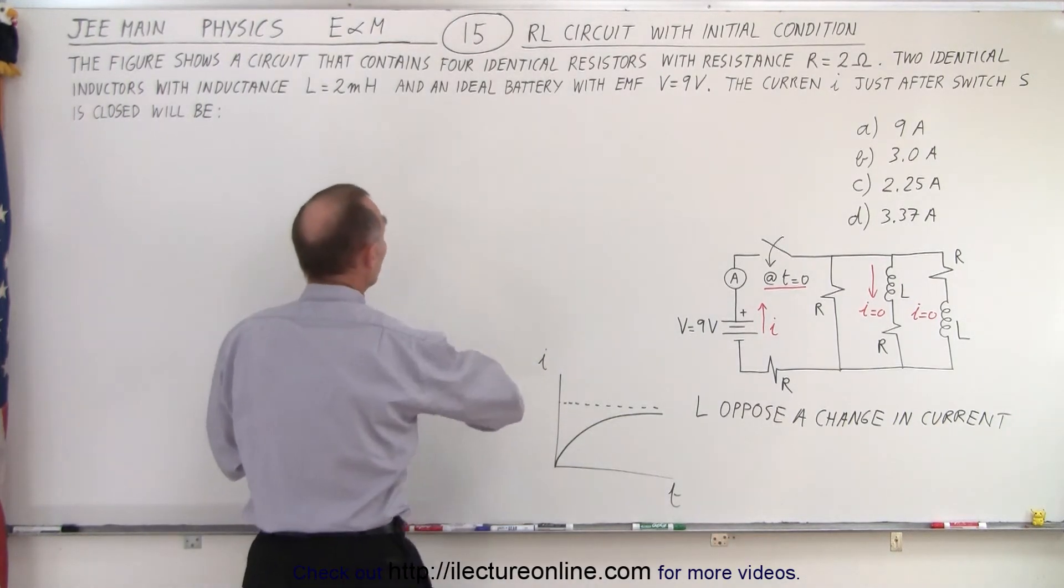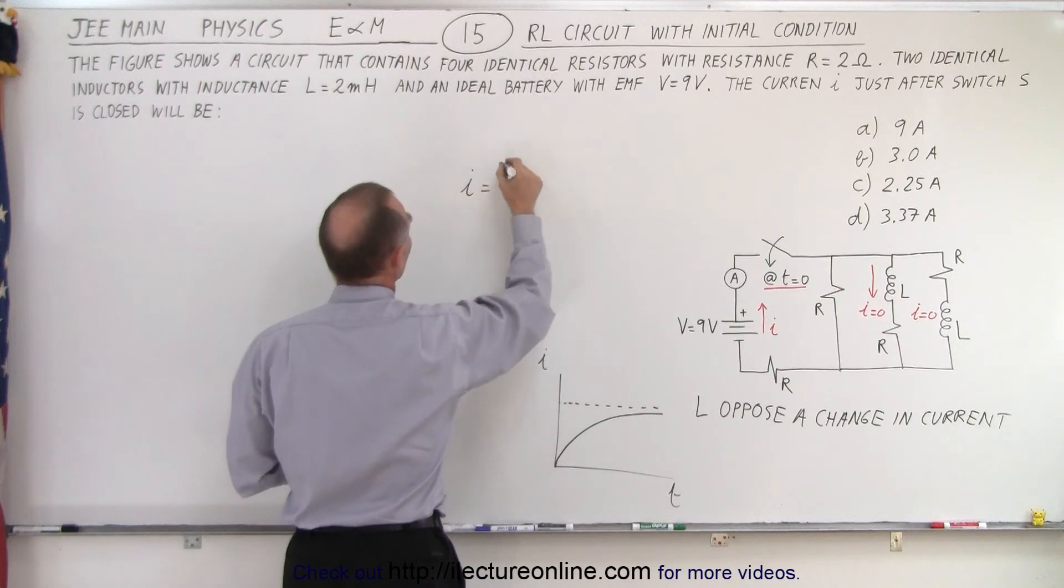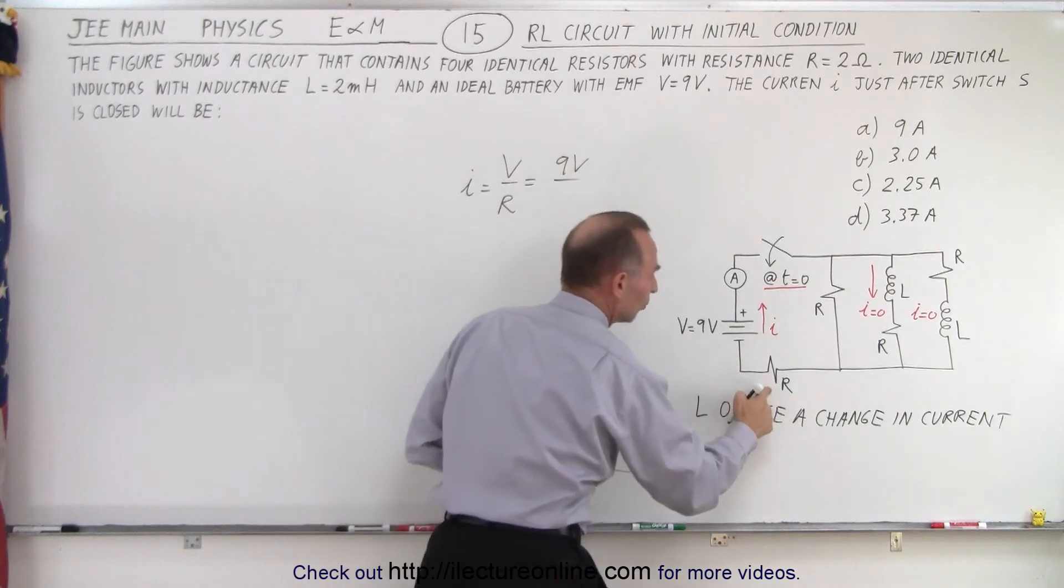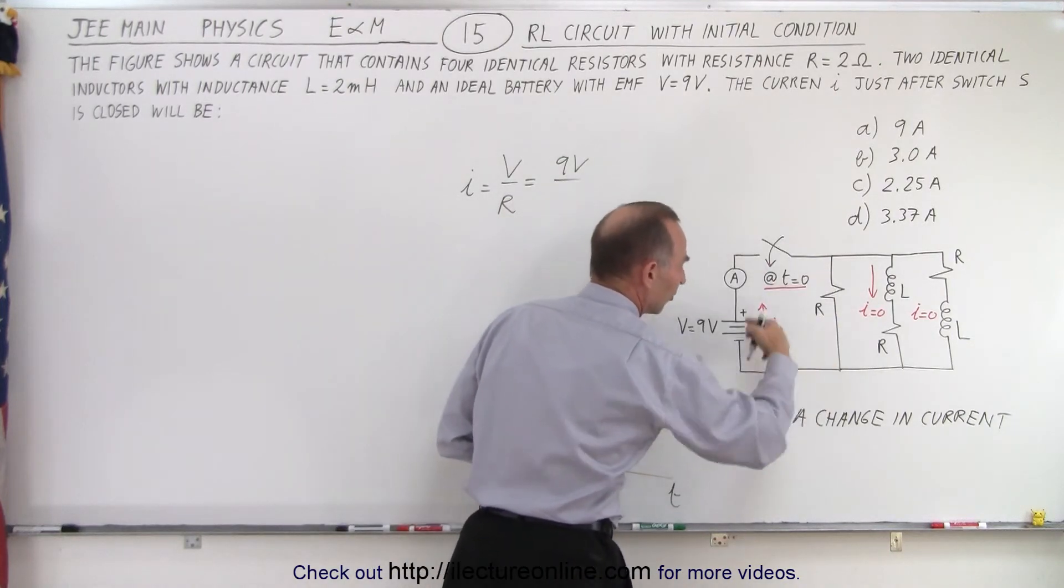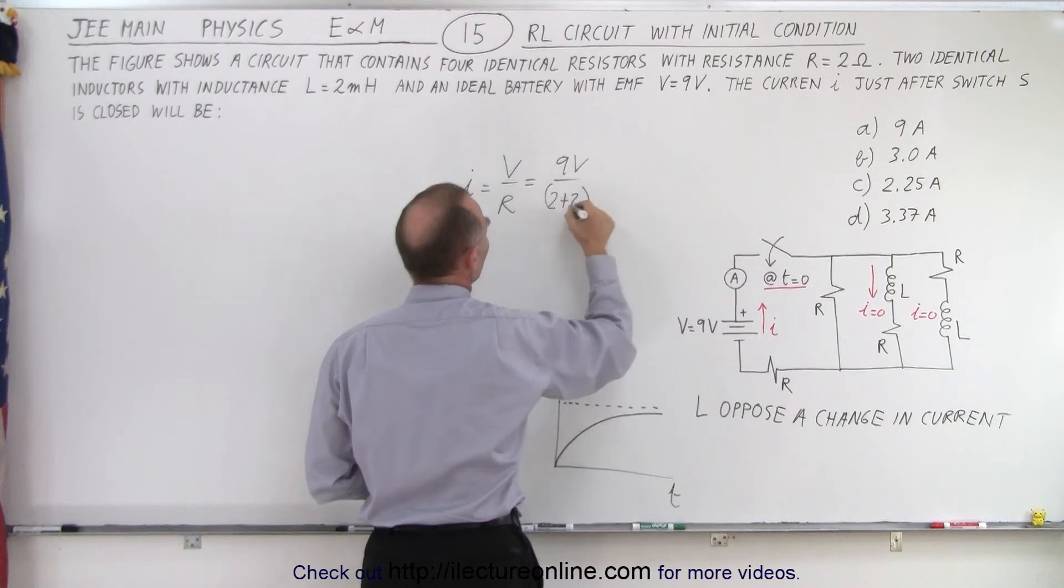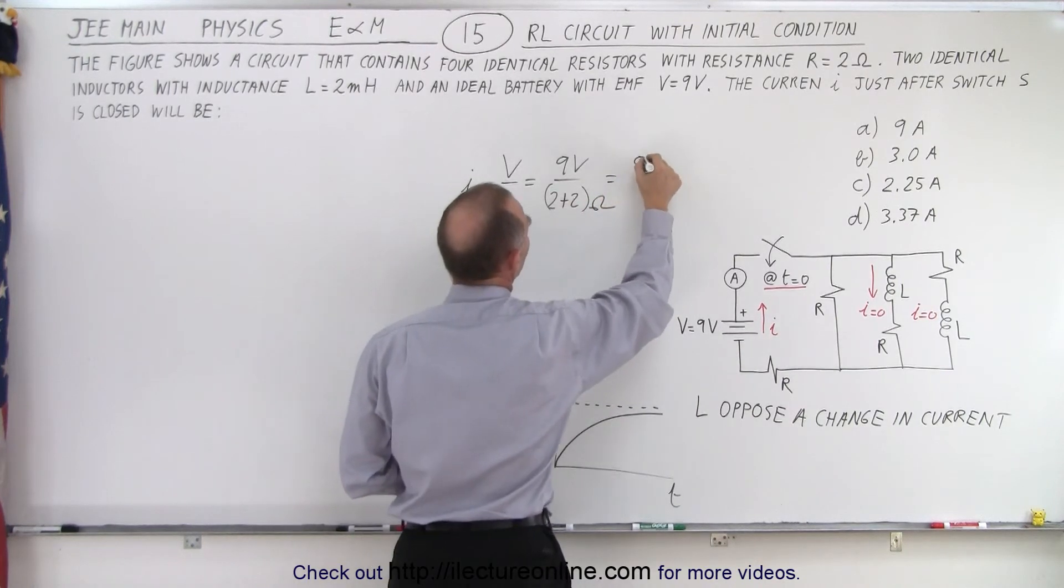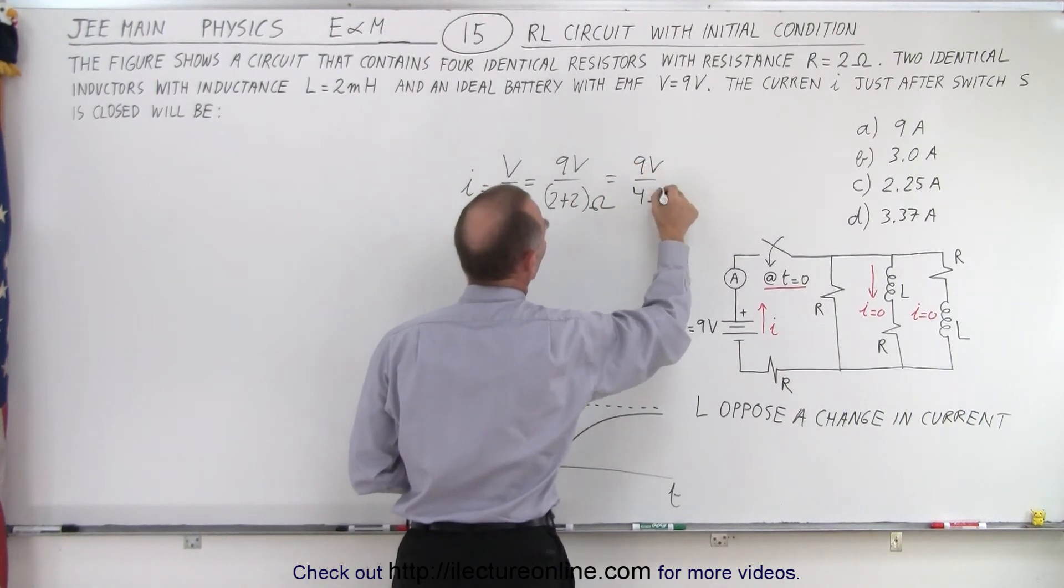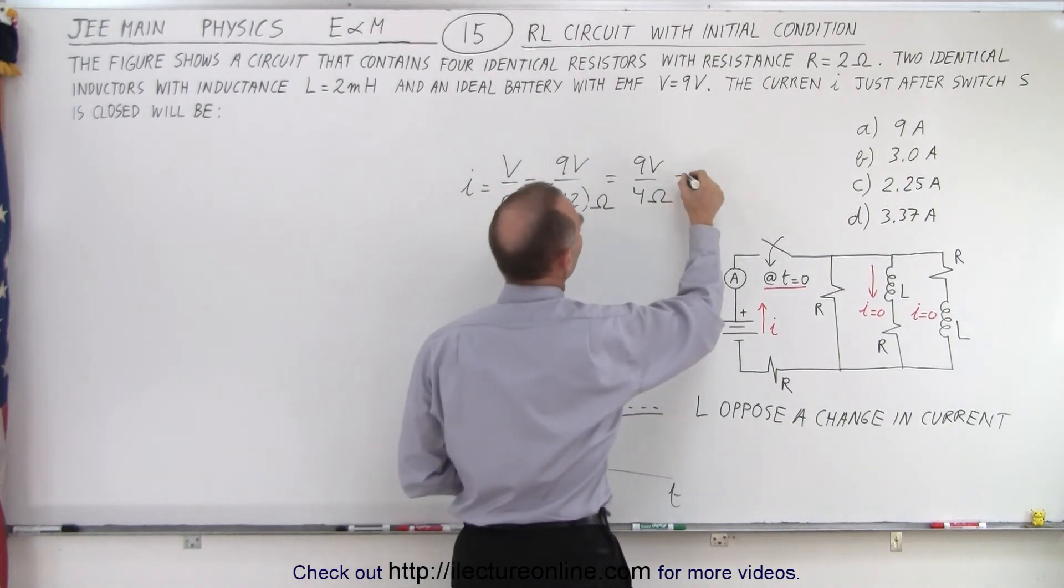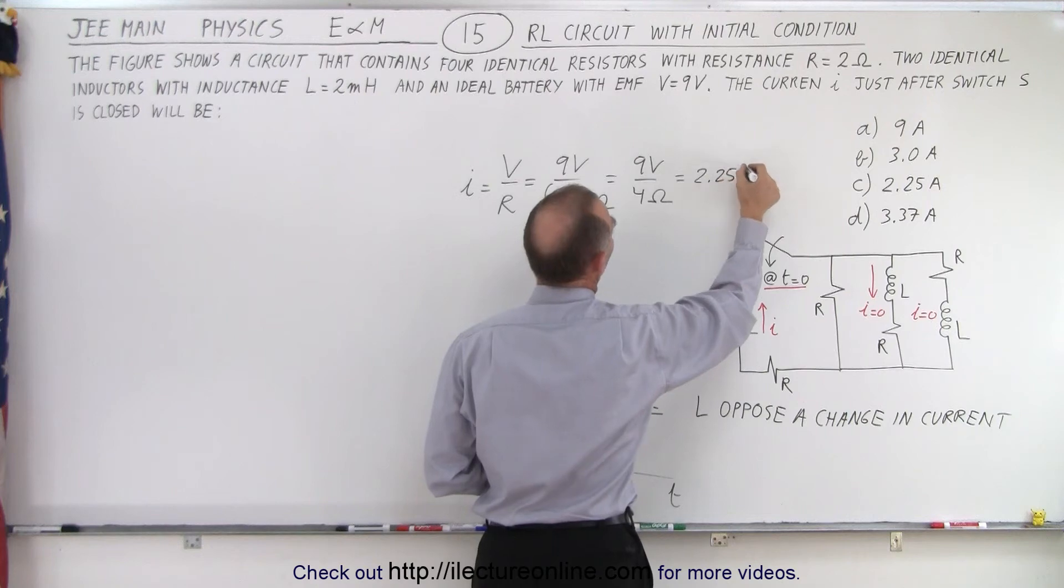So then we simply use Ohm's law. That means I equals V over R. The V is nine volts, the R is two plus two ohms, because you have two resistors in series. So that means two plus two ohms, which is equal to nine volts divided by four ohms. And so that would be equal to 2.25 amps.